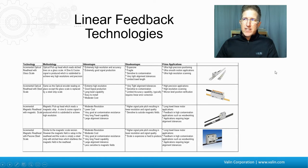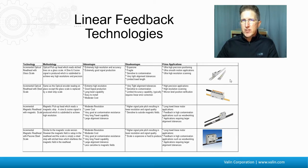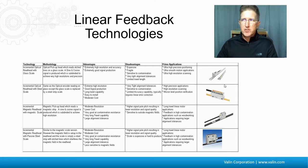There are different types of linear feedback, and each one has its pros and cons. There's optical, magnetic, and inductive. Some are more expensive because they're more precise; some are less expensive because they're not as precise. Some are more robust and better for machine cutting tool applications, for example, handling vibration or temperature.